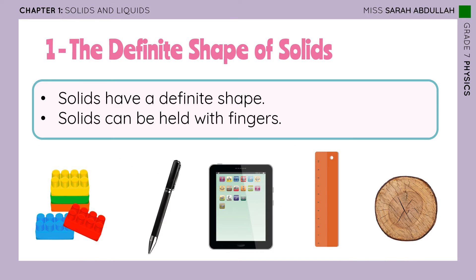From now on, everything put into the table we need to memorize. We conclude that solids have a definite shape — definite means that if I move this solid from one place to another, it doesn't change shape, just like your pencil, pen, tablet, or anything that's solid. Also, solids can be held with fingers. These two are really important properties of solids.